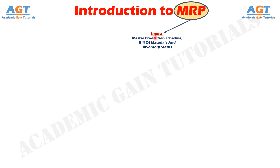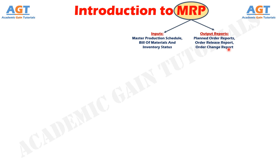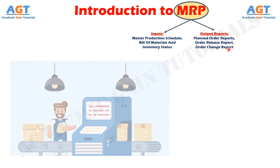It requires three inputs: namely, master production schedule, bill of materials, and inventory status. It generates three output reports: planned order reports, order release report, and order change report.